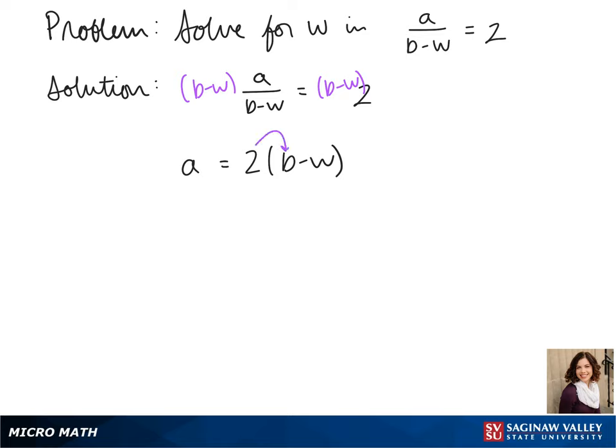We can't do anything with our w until that 2 is distributed, so we do that. And we get a equals 2b minus 2w.